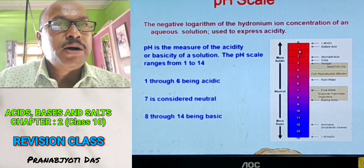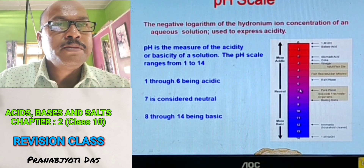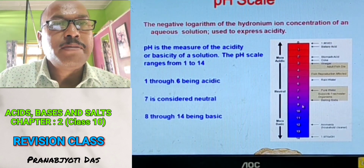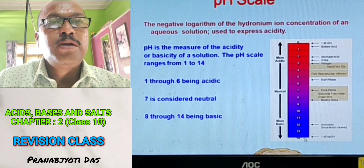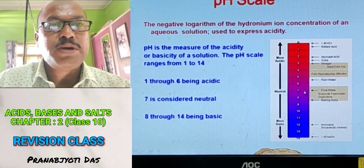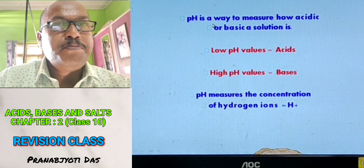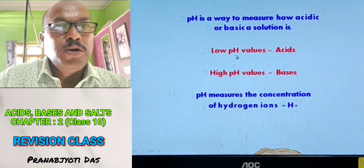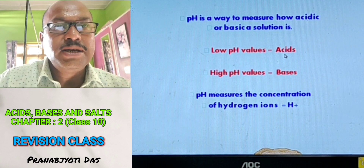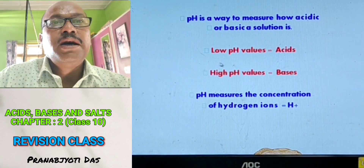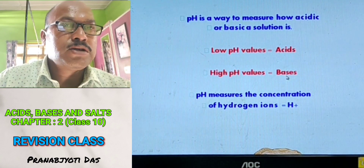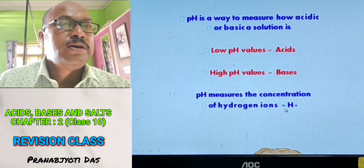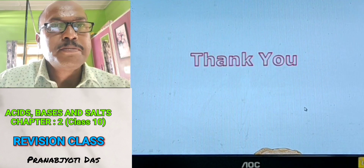In the pH scale diagram, the red colored part starts from 1 to 7, and from 8 to 14 it becomes blue. The upper part is acidic, the lower part is basic, and the middle — 7 — is neutral. Lower the pH value, the solution is acidic. Higher the pH value (more than 7), the solution is basic. pH measures the concentration of hydrogen ion (H+ ion) in the solution. Thank you.